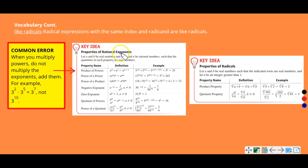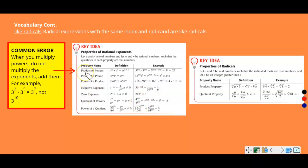Properties of rational exponents. You have seen properties of exponents before, and properties of rational exponents are going to be very similar. Rational exponents means we're dealing with fractions, so dust up on your fractions a little bit because we will be using those today. One thing that is a common error for students: when you have the same base and you're multiplying, you add exponents — this is called the product of powers.